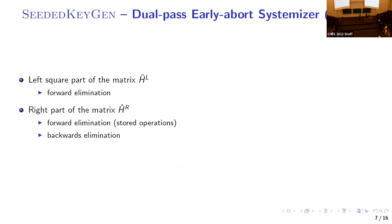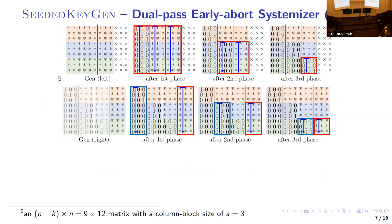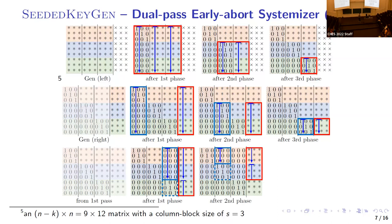The dual-pass early-abort (DPS) systemizer reduces the cost of failure checking by performing forward elimination on the left square part first, storing operations back to the original pivoting column. On success, it replays stored operations on the right part of the matrix to obtain the upper triangular form of the entire matrix, then carries out back substitution to get the systematic form.